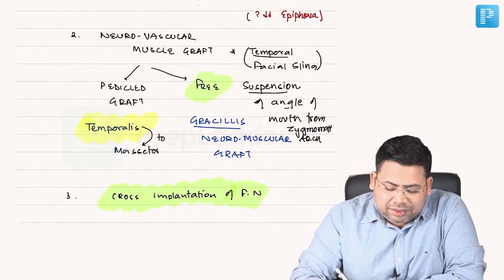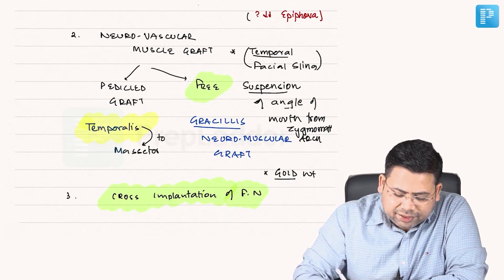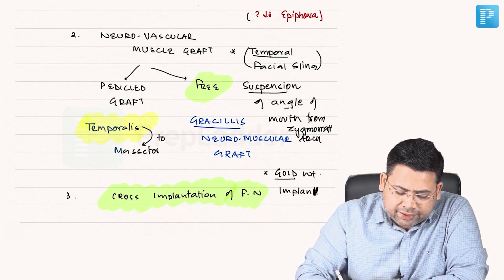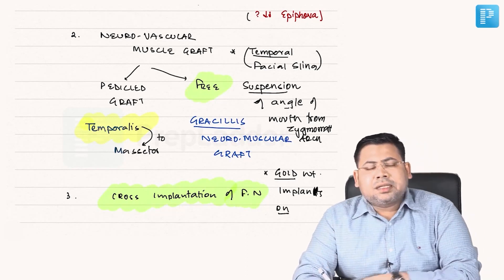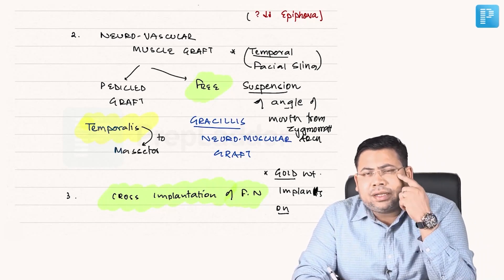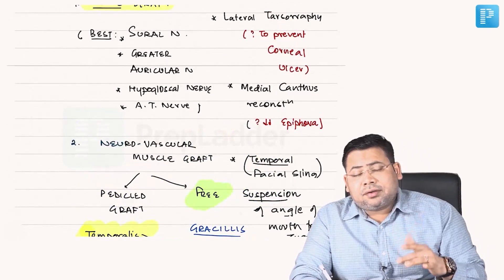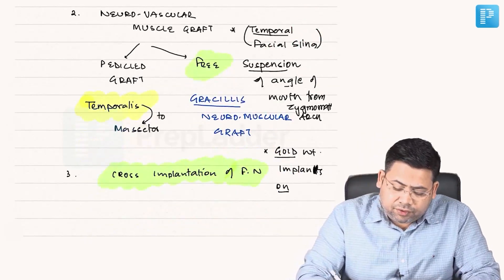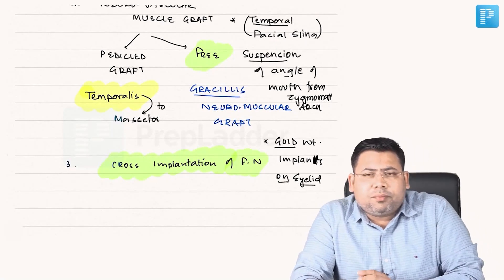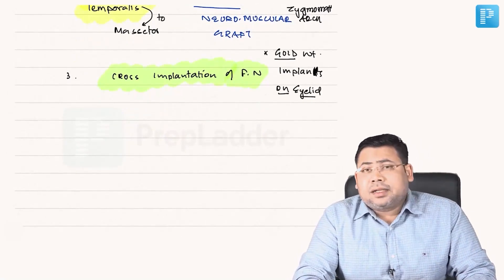Gold weight implants on the upper eyelid are used by some but are not advocated for every patient. The most important static repair procedures are medial canthus reconstruction and lateral tarsorrhaphy — these are very important. Cosmetic reconstruction and protection of the eye are the main aims of static repair. Next, we move to Frey syndrome, which will be the last topic discussed in salivary glands.